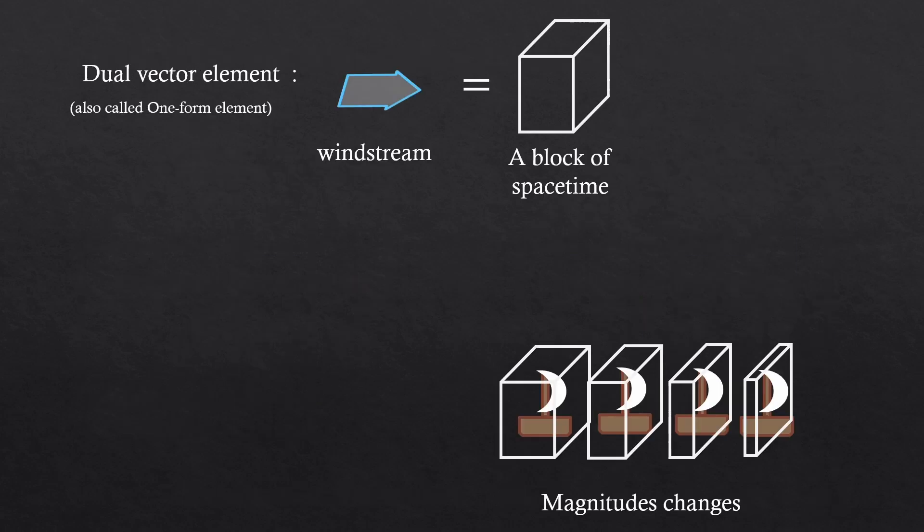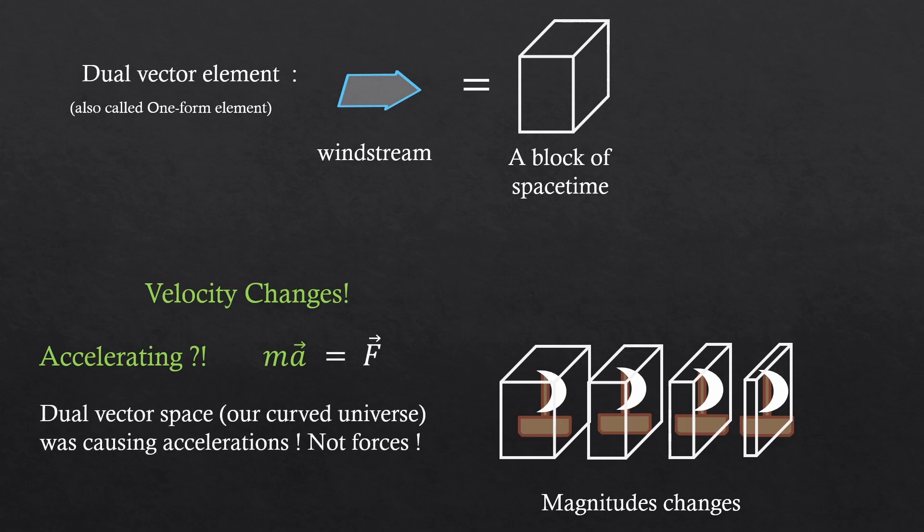What if there's a world where the size of the space-time unit boxes varies? The velocity will keep changing. Doesn't that mean accelerating? And doesn't that mean there exists a force? It was the dual vector space, our curved universe, that was causing accelerations, not forces.